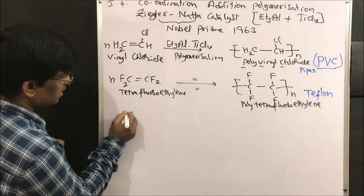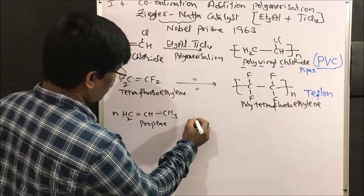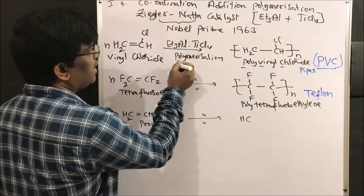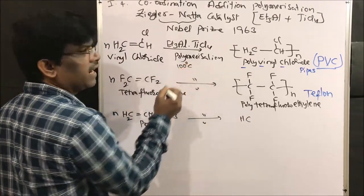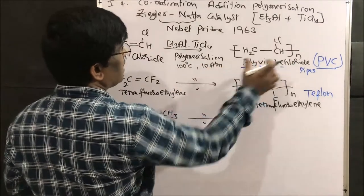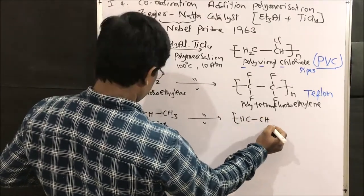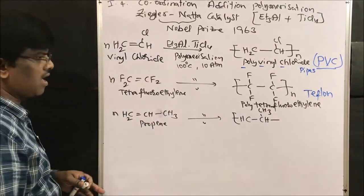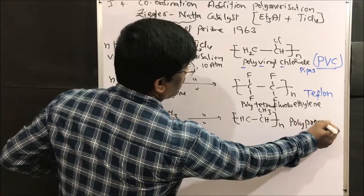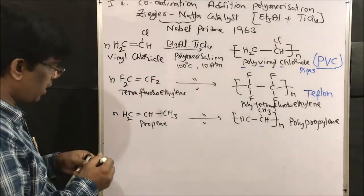Next, if we take n moles of propene (CH2=CH-CH3) under Ziegler-Natta catalyst at low temperature around 10 degrees centigrade and a pressure of 10 atmospheres, polymerization gives the polymer (CH2-CH-CH3)n, which is polypropylene. Polypropylene is an important polymer.